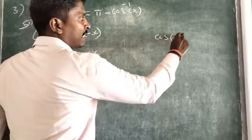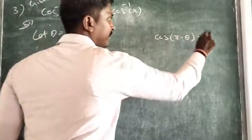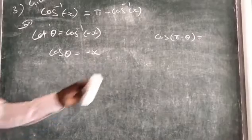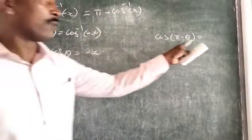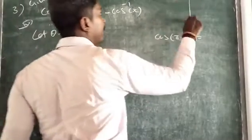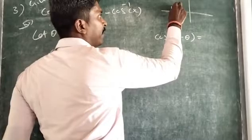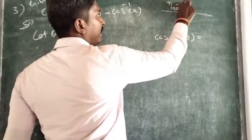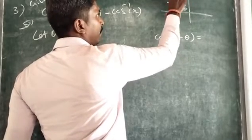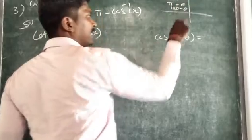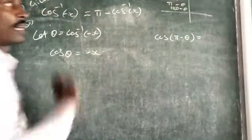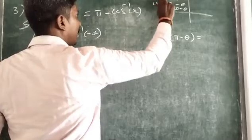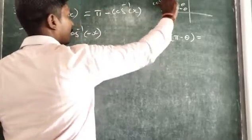Now suppose we write cos(π - θ). Theta lies in the second quadrant. If we have 180 - θ, that is π - θ, and here π/2 plus θ. Theta lies in the second quadrant.